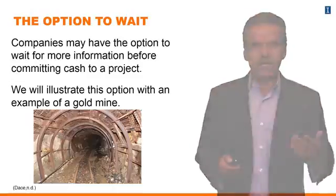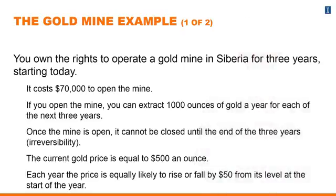These are the numbers we're going to use. You own the rights to operate a gold mine for three years — this is a monopoly situation I'll discuss later. There is a certain cost to open the mine, and if you open it you can extract a thousand ounces of gold. Let's assume to begin with that this investment is irreversible: once the mine is open, you have to keep it open until the end of the three years.